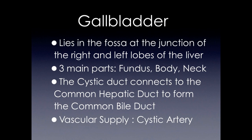The gallbladder lies in the fossa, the junction of the right and left lobes of the liver. It has three main parts: the fundus, body, and the neck. The cystic duct connects the common hepatic duct to the common bile duct, and it's supplied by the cystic artery.